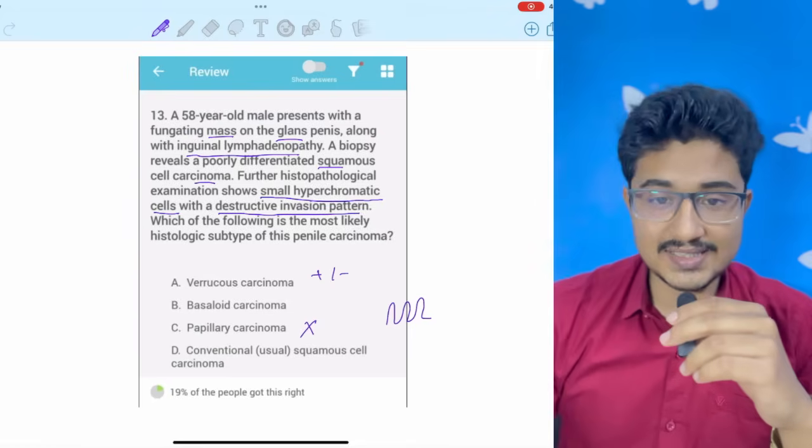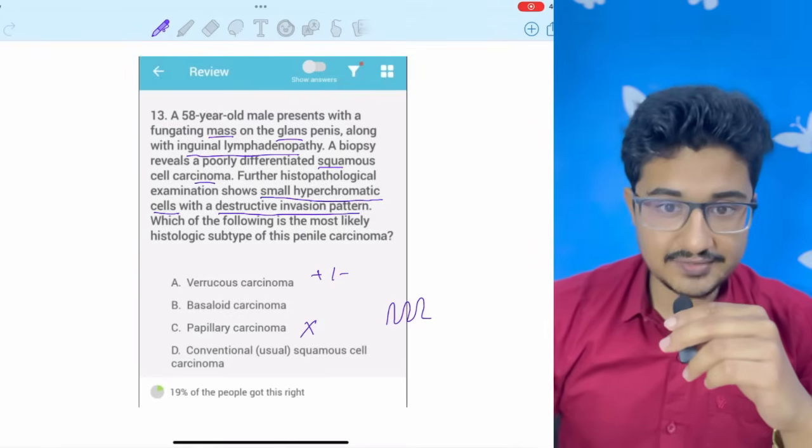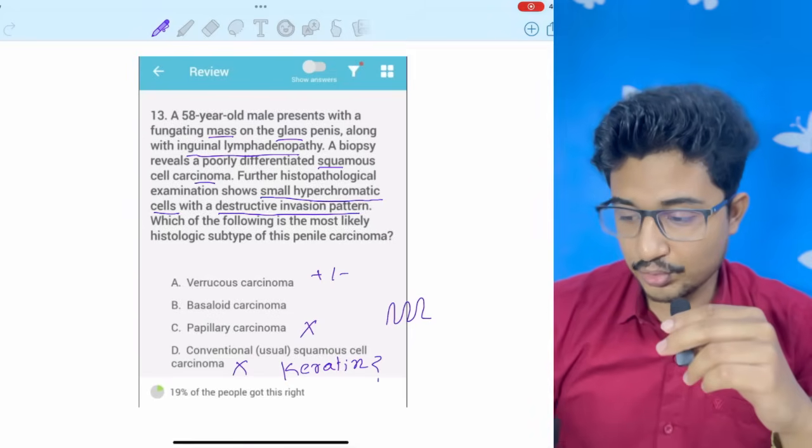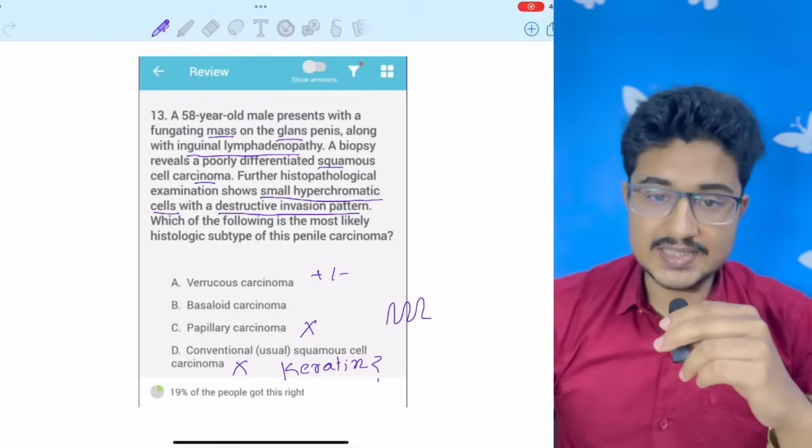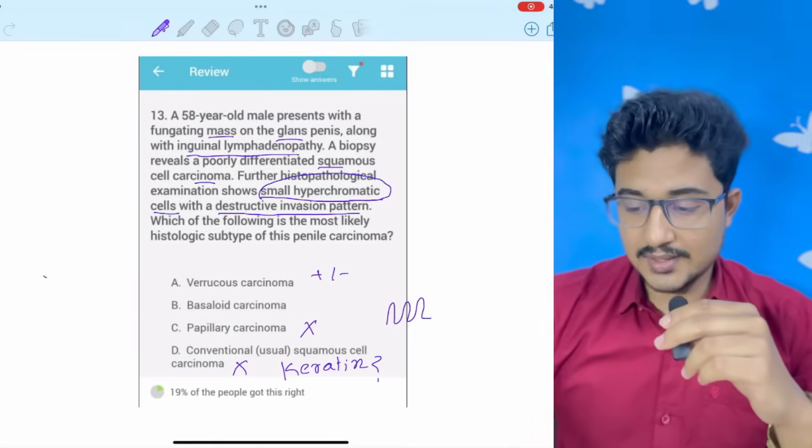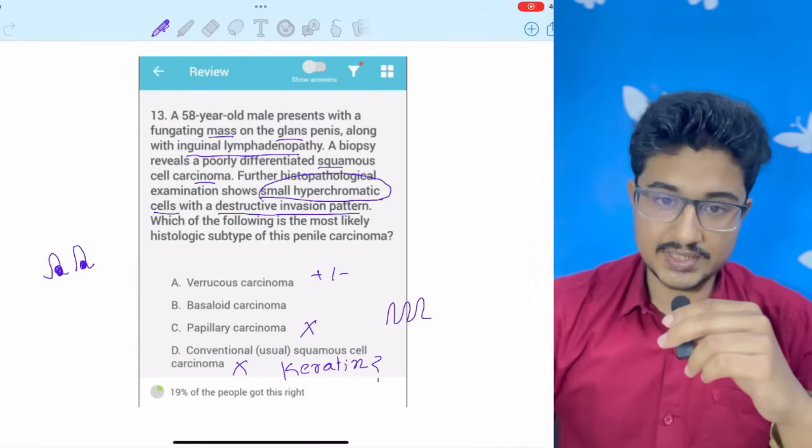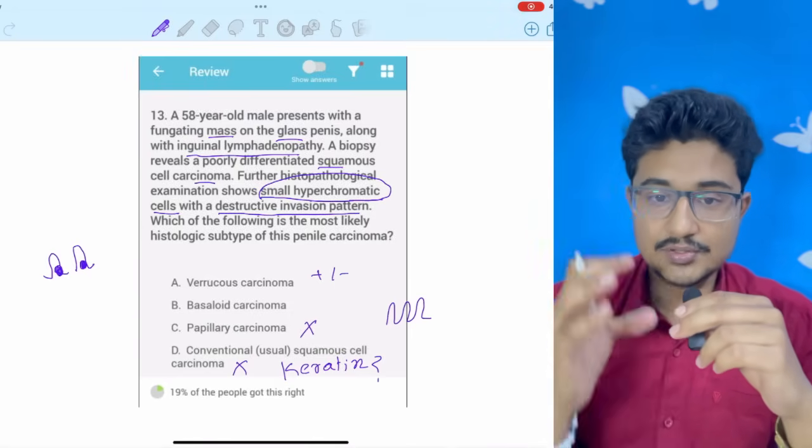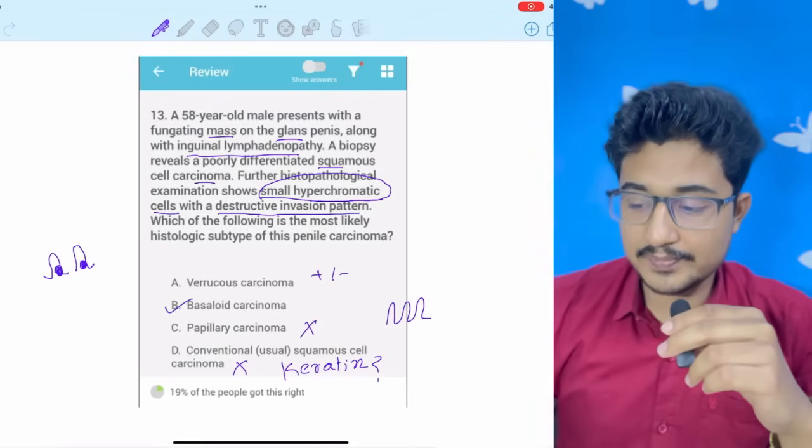Conventional or usual squamous cell carcinoma. In usual squamous cell carcinoma, I think I am going to see the classical features like the keratin pearl. So, keratin pearl is missing. So, I am also going to rule out this option. I am left with verrucous carcinoma and basaloid carcinoma. I am going to mark basaloid carcinoma because in the question, it is telling small hyperchromatic cells. If you see the skin, the basal cells, they have hyperchromatic nucleus. In BCC also, you see nest of blue cells. Blue is the color of the nucleus. So, in BCC also, there is basal cells and there is hyperchromatic nucleus. So, I am going to go for basaloid cancer.